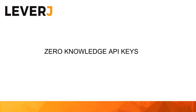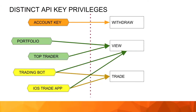To start, just to refresh — what are API keys and what is the purpose of an API key? An API key allows delegation of a restricted set of operations to other entities. Sometimes it could be a trading app, a portfolio viewer, or something else, and this is very important to create a comprehensive platform.